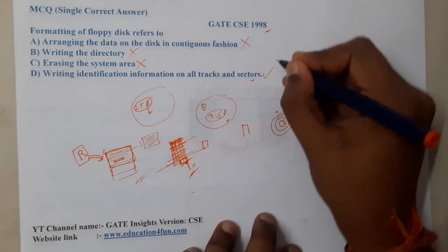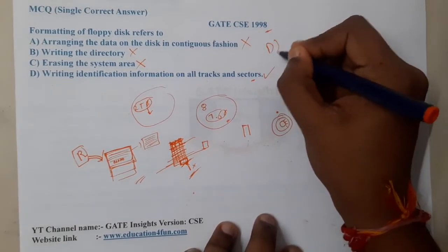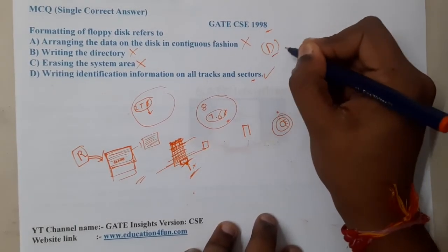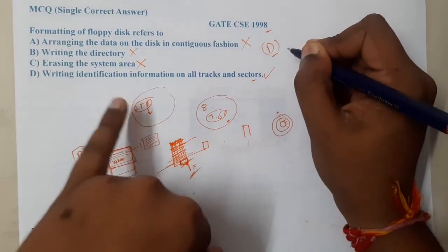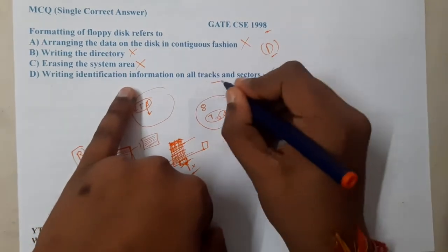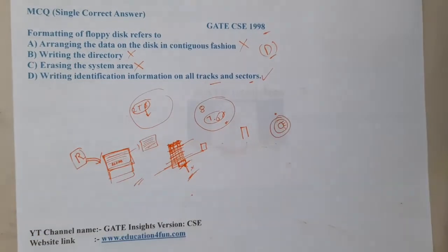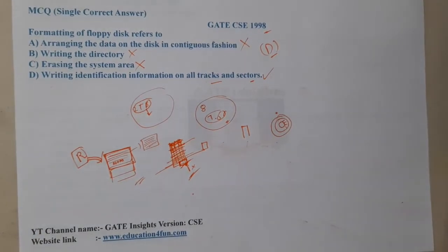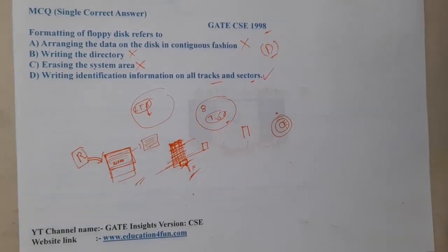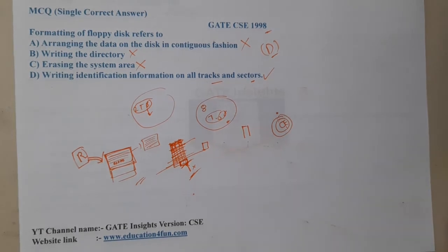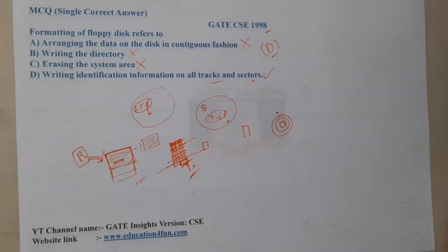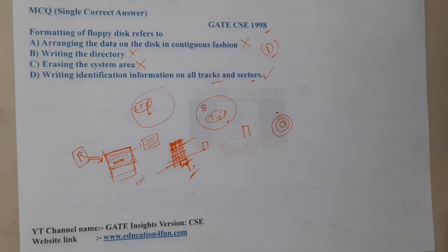With that understanding, option D is the most appropriate answer, because when we perform a full format we are indirectly writing the same data everywhere inside the disk. I hope everyone got a clear idea. In the next lecture, let us continue with the next question.